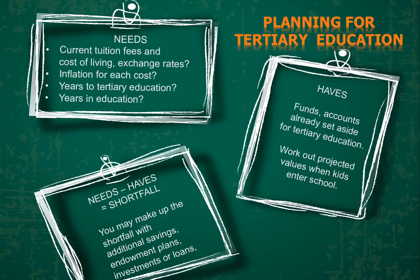Some suggestions to help you get started: First, work out how much your children's tuition fees and living costs will be, taking into account current prices and the projected inflation rate. If you are hoping to provide an overseas education, consider the impact of currency exchange rates and the projected inflation rate in the country of destination. Second, take stock of the funds you have currently set aside for their tertiary education, as well as the projected values of your investments by the time they enter school. If there is a shortfall, you may wish to consider the range of financial products and investments available in the market.